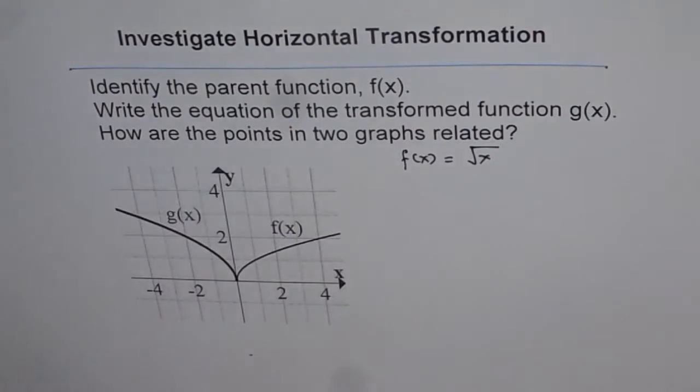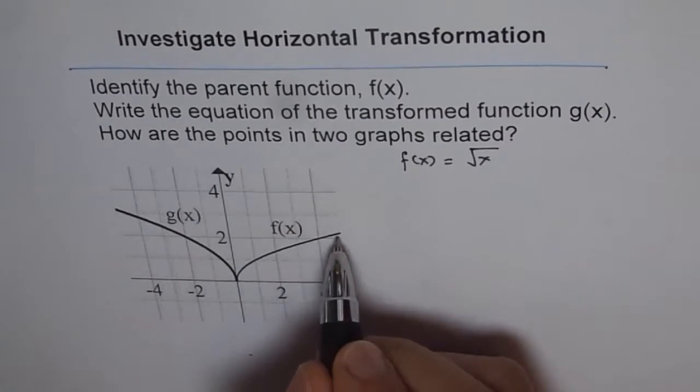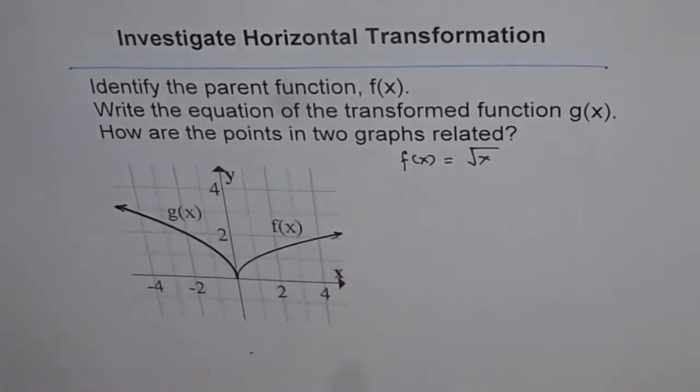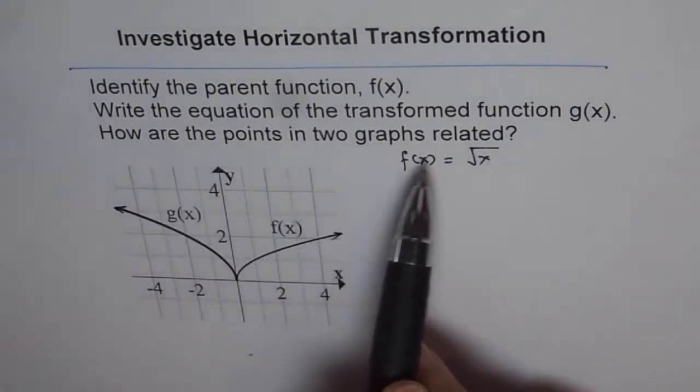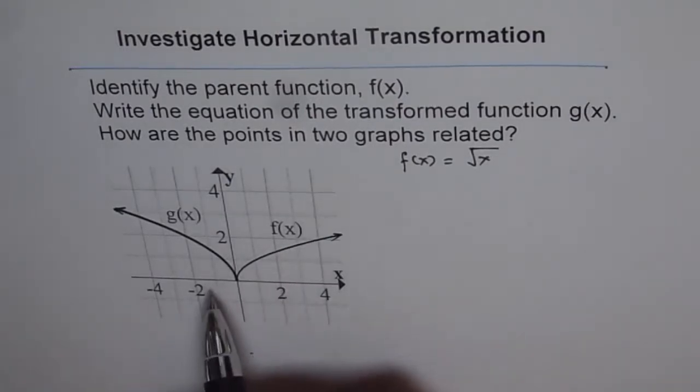Now the second question is, write the equation of the transformed function g of x. So this is f of x given to us, and that is the transformed function g of x given to us. How are the points in two graphs related? As you see, you notice a couple of things.